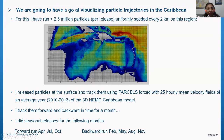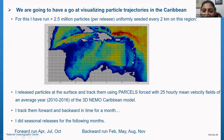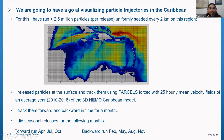Now we are going to play with the visualization tool for particle trajectories in the Caribbean. For this tool, I ran more than two and a half million particles per release, placed uniformly throughout the domain. These are surface particles tracked using parcels, forced by 25-hourly mean velocity fields from the NEMO Caribbean model, averaged over 2010 to 2016 — so it represents a mean year.